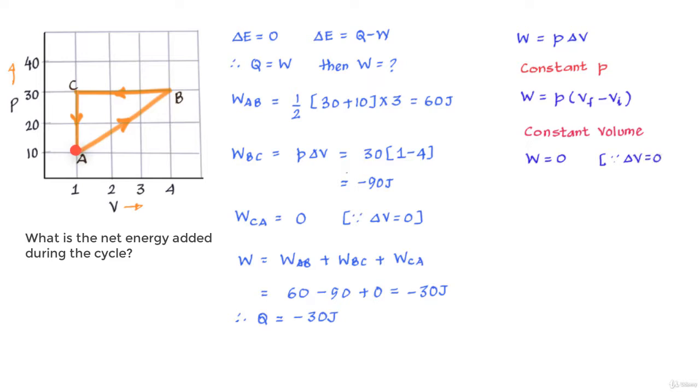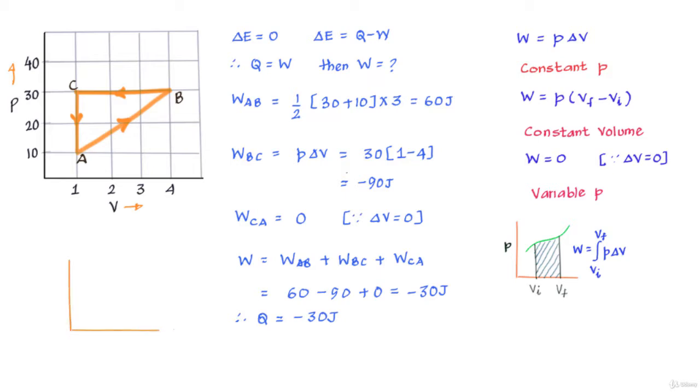And finally if pressure is varying then we may need to use integral calculus to find the work done that is nothing but finding the area under the curve that the process is being shown for on a PV graph. Also when you can see that the area under a curve of a process is a geometric figure like a rectangle or a triangle or a trapezoid you do not need to use integral calculus, you can find the area using simple geometry only.